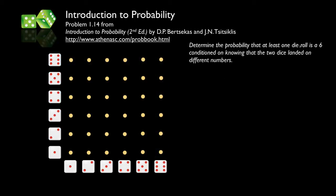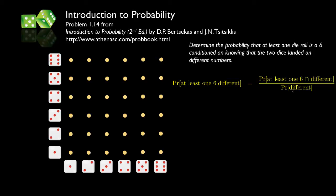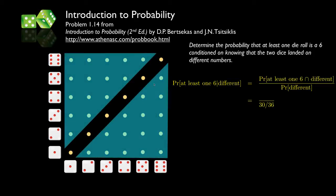Finally, we find the probability that at least one die is a six, conditioned on the two dice landing on different numbers. The outcomes where both dice differ are the 30 off-diagonal outcomes. The outcomes where dice differ and at least one is a six are ten. So the conditional probability is ten over thirty, or one-third.